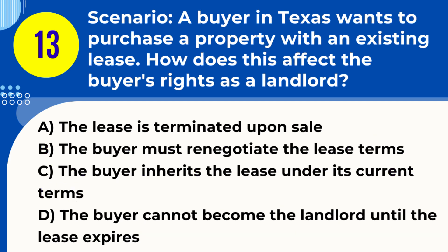Question 13. Scenario: A buyer in Texas wants to purchase a property with an existing lease. How does this affect the buyer's rights as a landlord? A. The lease is terminated upon sale. B. The buyer must renegotiate the lease terms. C. The buyer inherits the lease under its current terms. D. The buyer cannot become the landlord until the lease expires. Answer: C. The buyer inherits the lease under its current terms. Explanation: In Texas, when a property is sold with an existing lease, the buyer inherits the lease and becomes the landlord under the existing lease terms.